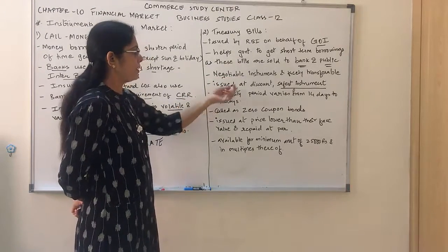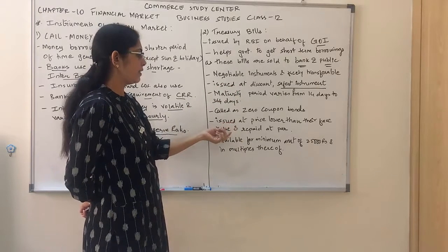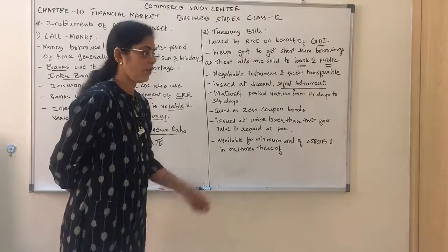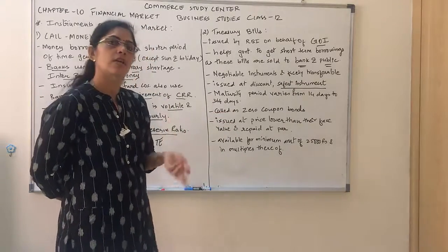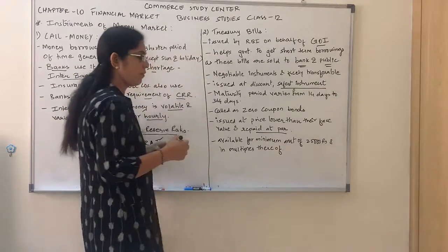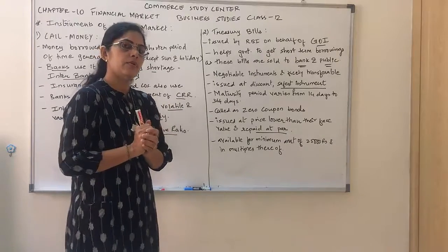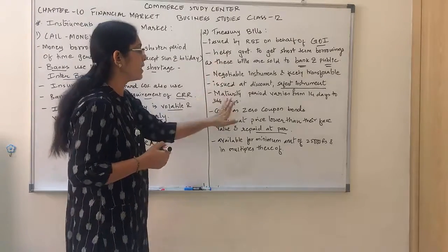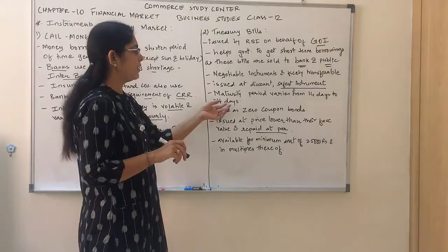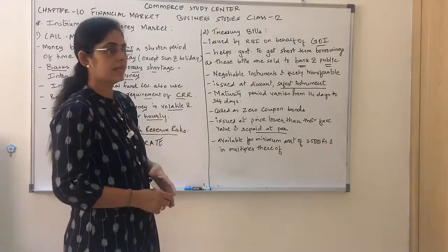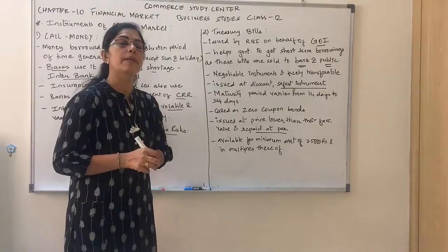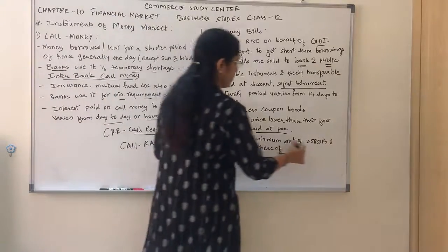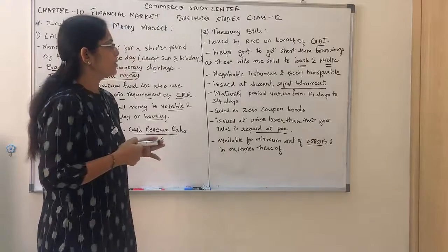Treasury bills are issued at a discount — that is, at a price lower than their face value — and repaid at par. When it is issued, it is at a price lower than the face value, and when you redeem it, you get the full par amount. The maturity period for treasury bills is generally from 14 days to 364 days. They are available for a minimum cost of ₹25,000 and then in multiples thereof.